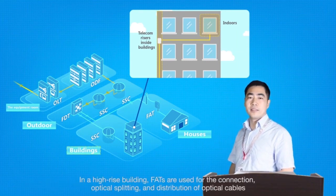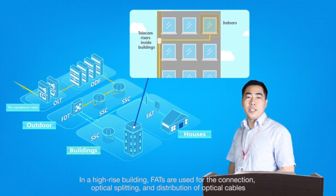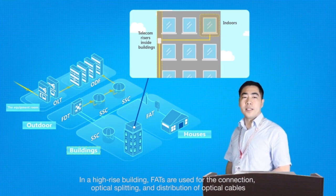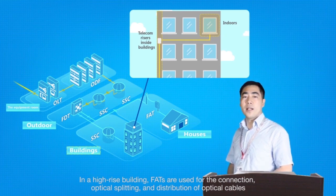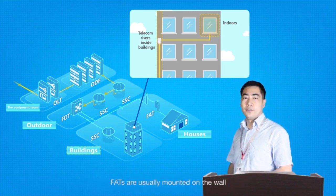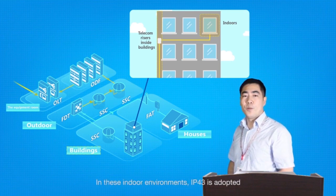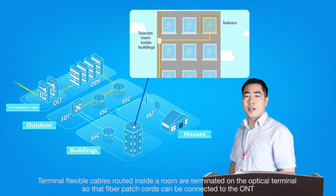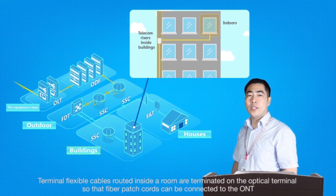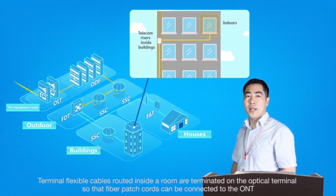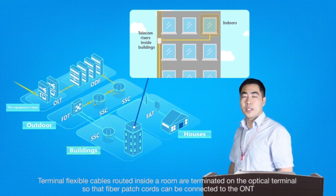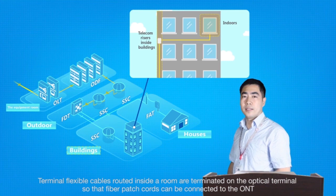After the outdoor connection, optical cables are routed inside high-rise buildings or houses. In a high-rise building, FATs are used for the connection, optical splitting, and distribution of optical cables. FATs are usually mounted on the wall. In these indoor environments, IP43 is adopted.